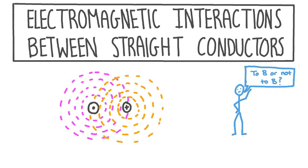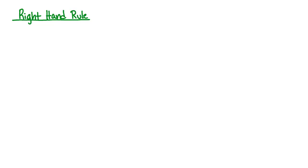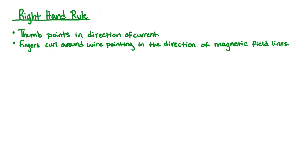Before we do, we must refresh our memory about the magnetic field around a single line of current. In order to understand how to find the net magnetic field around more than one current-carrying wire, we must first understand how to draw the magnetic field around a single current-carrying wire by doing the right-hand rule. We need to remember that our thumb will point in the direction of the current and our fingers will curl around the wire pointing in the direction of the magnetic field lines.